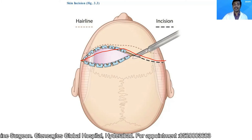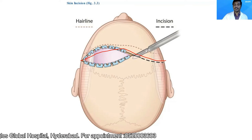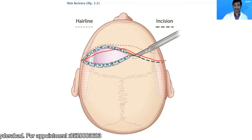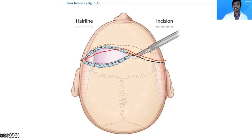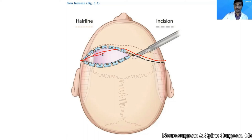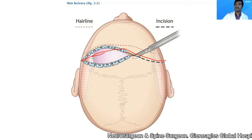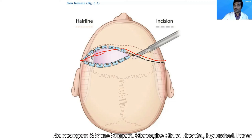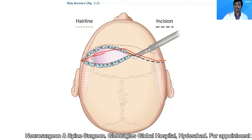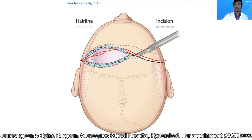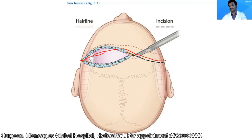I use a number 10, 11, or 15 blade surgical scalpel to incise the skin down to the level of the pericranium. Above the superficial temporal line, and below it, I take the skin incision down to the level of the temporalis fascia.